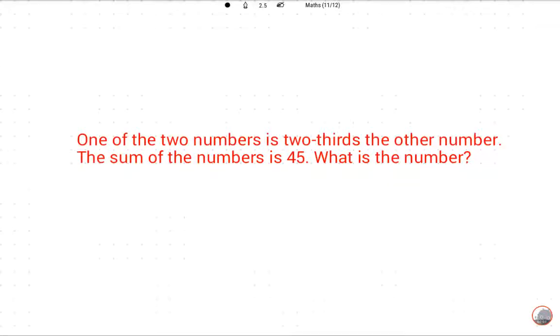Please subscribe this channel, like this video, and comment and share. Okay, let's read this question. One of the two numbers is two-thirds the other number. The sum of the numbers is 45.